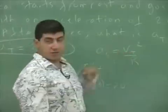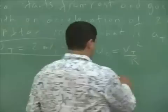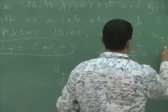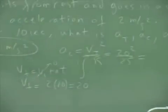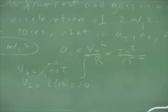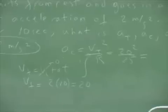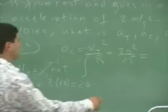Now, you can take that and put it here and calculate the centripetal acceleration. That's 400 over 25, which is 16, right? 16 meters per second squared.